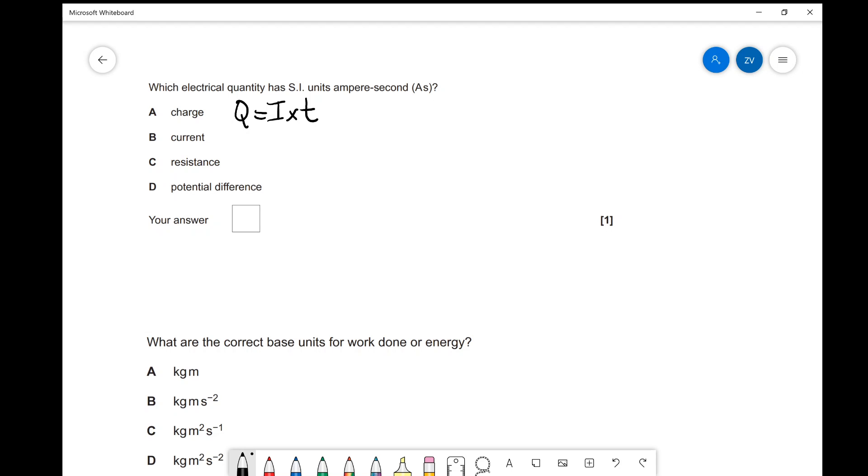Well, actually in this case we are relatively lucky because the very first answer is the correct one. And we know that because the formula for charge is current times time, current is measured in amps, and time is measured in seconds. So the base unit for charge, the Coulomb, is actually amp seconds. So in this case, the correct answer is A.